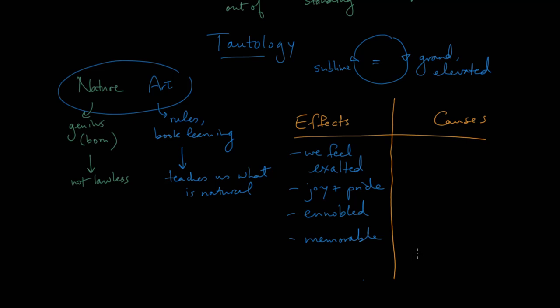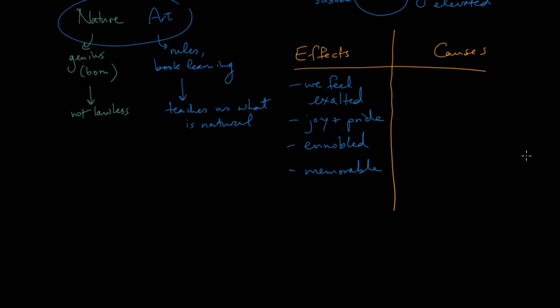Now if we think about how useful this is, these effects, in terms of thinking about defining the sublime, it doesn't help us much, does it? Because then we say, well, what makes us feel exalted? Why do we experience joy and pride? How are we ennobled? These are all wonderful things to say, but they don't give us a kind of formula. And that's the difficulty. If you were trying to create a book of rules about the sublime, it's almost impossible, because where do you start?